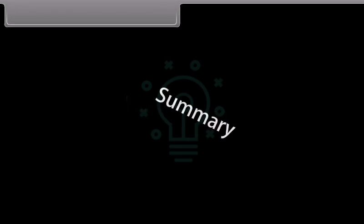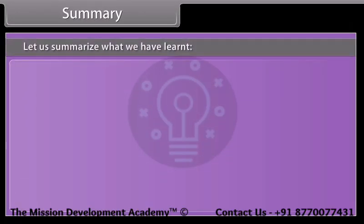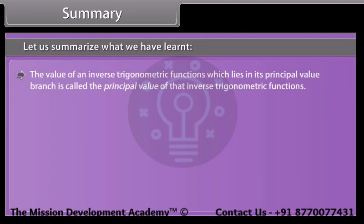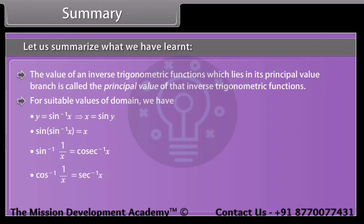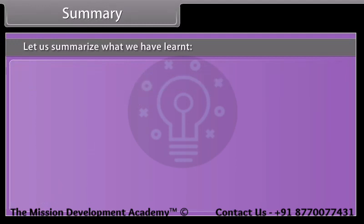Summary: The value of an inverse trigonometric function which lies in its principal value branch is called the principal value of that inverse trigonometric function. For suitable values of domain, we have the formulas for inverse trigonometric functions as discussed.